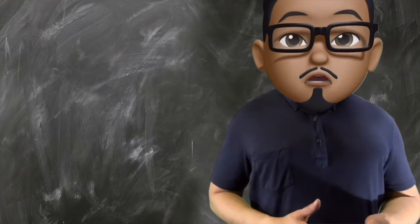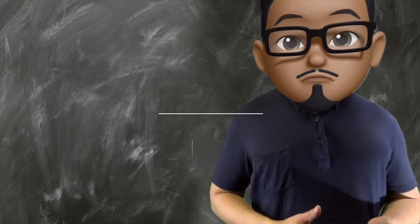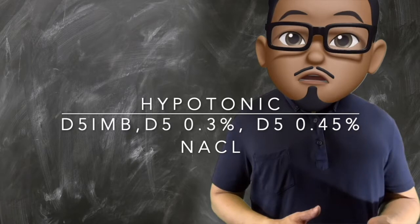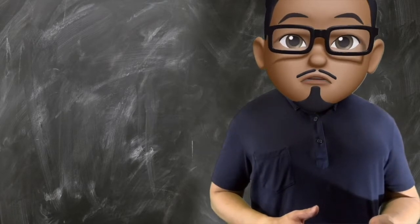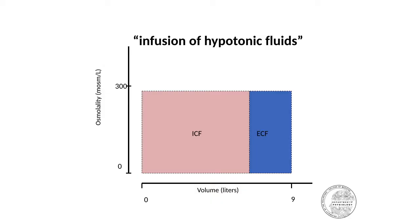Infusion of hypotonic fluids like distilled water, D5-IMD, D5 0.3% sodium chloride, or half-normal sodium chloride, will lower down your osmolarity.